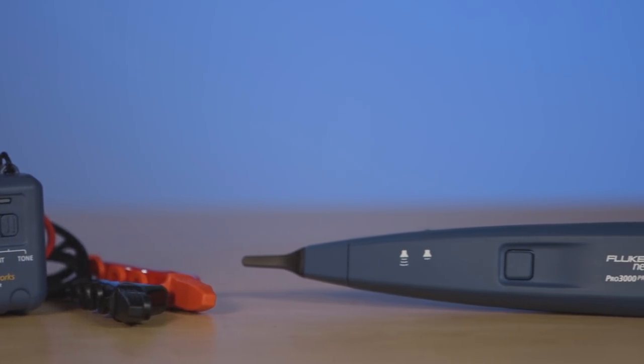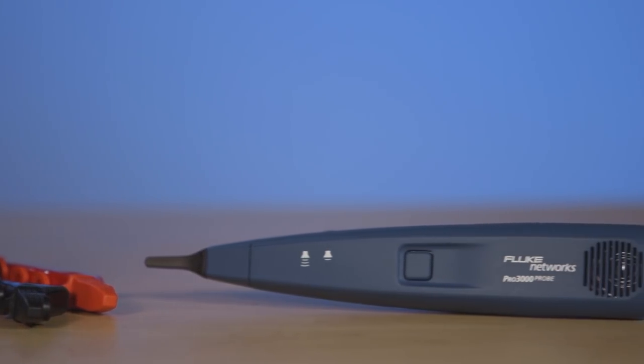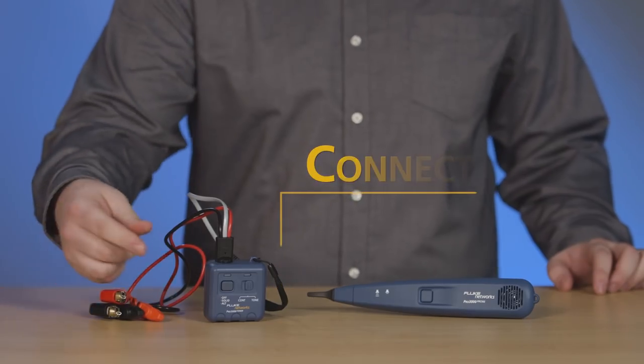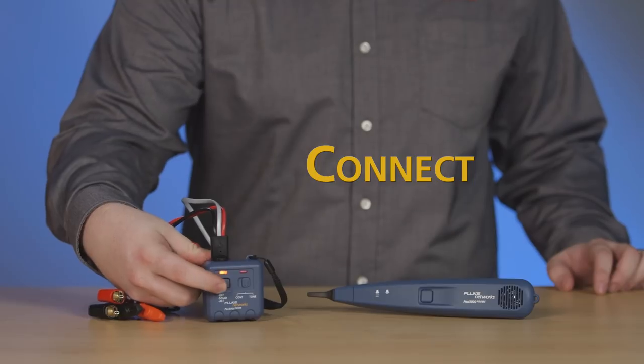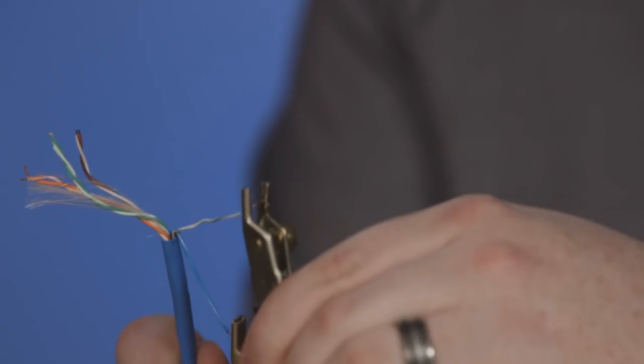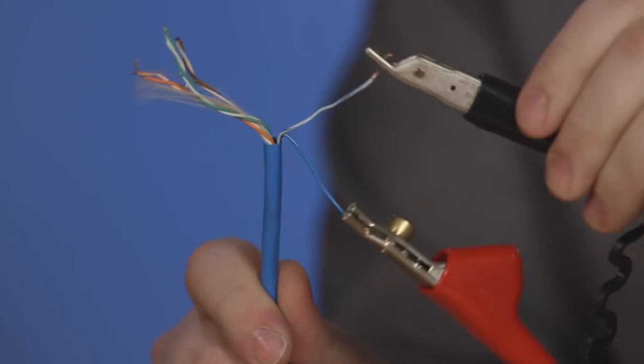Using SmartTone with the Pro3000, tone and probe can be done in three simple steps. First, turn on the Pro3000 tone generator and press the button until the red light on the left is blinking. Then connect it to the cable you want to trace.